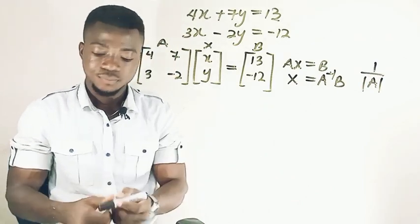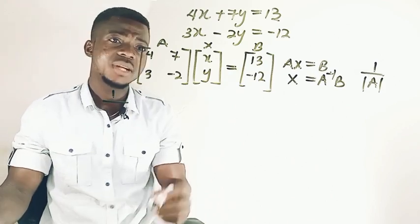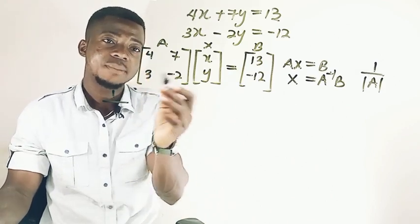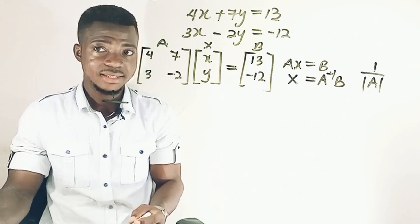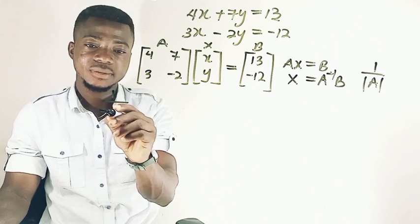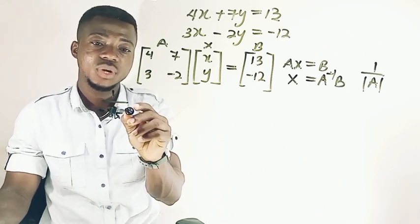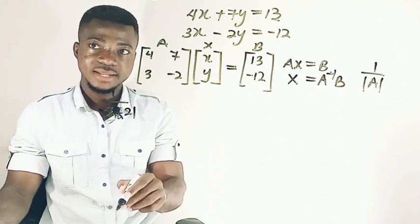Now, we're going to have something like this. So 1 over, so the determinant of A is going to be 4 times negative 2, which is negative 8. So negative 8 minus 3 times 7, which is 21. So that's it.